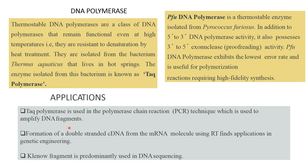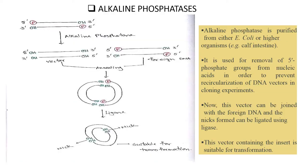Applications: Taq polymerase is used in the polymerase chain reaction (PCR) technique, which is used for amplification of DNA fragments. Formation of double-stranded cDNA from mRNA using RT finds application in genetic engineering. The Klenow fragment is predominantly used in DNA sequencing.